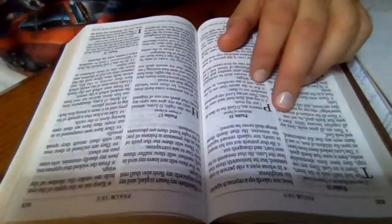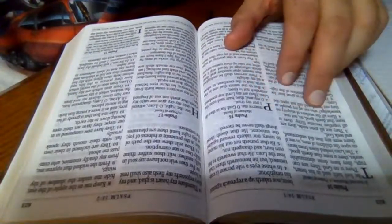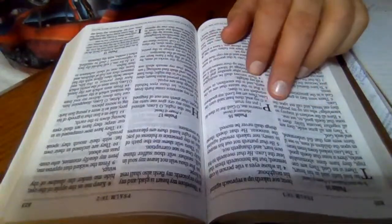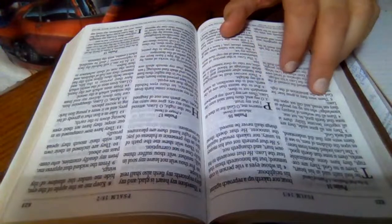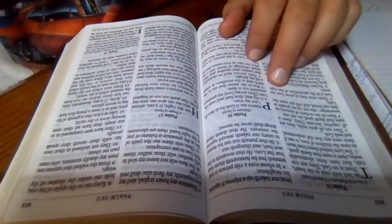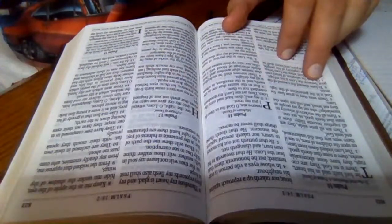They are all gone aside. They are altogether become filthy. There is none that doeth good, no not one. Have all the workers of iniquity no knowledge, who eat up my people as they eat bread and call not upon the Lord? There were they in great fear, for God is in the generation of the righteous.